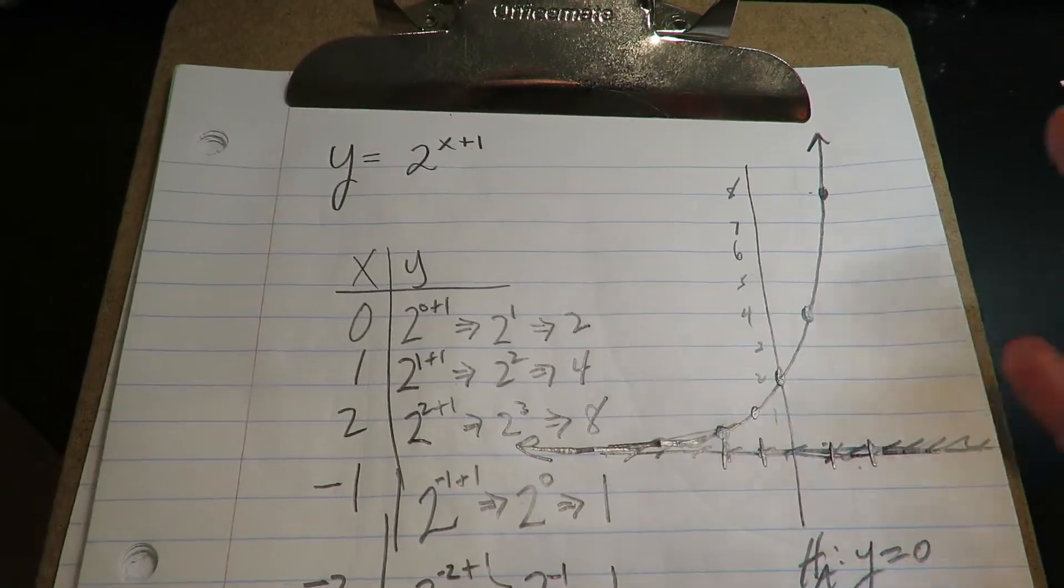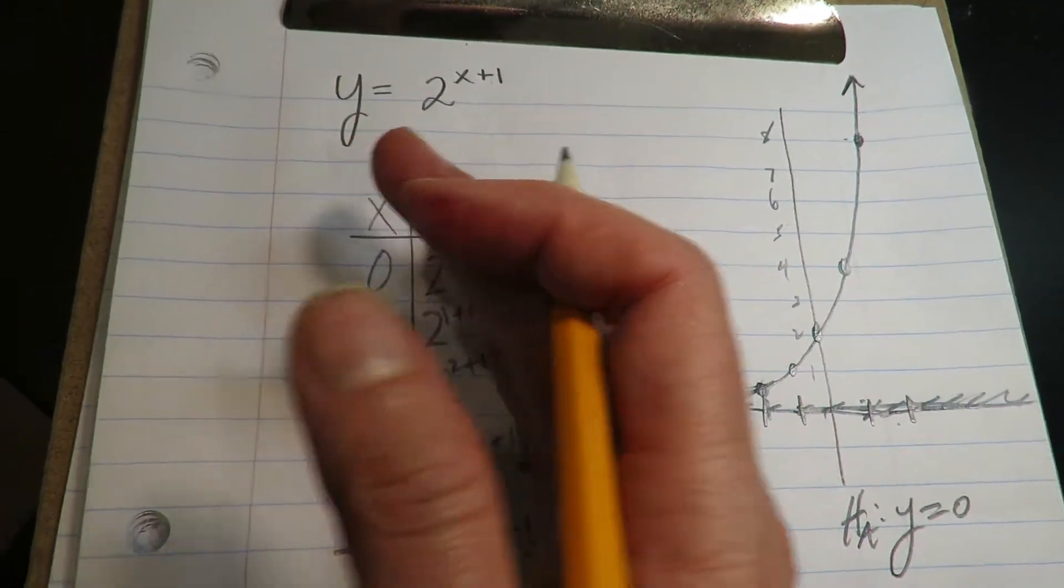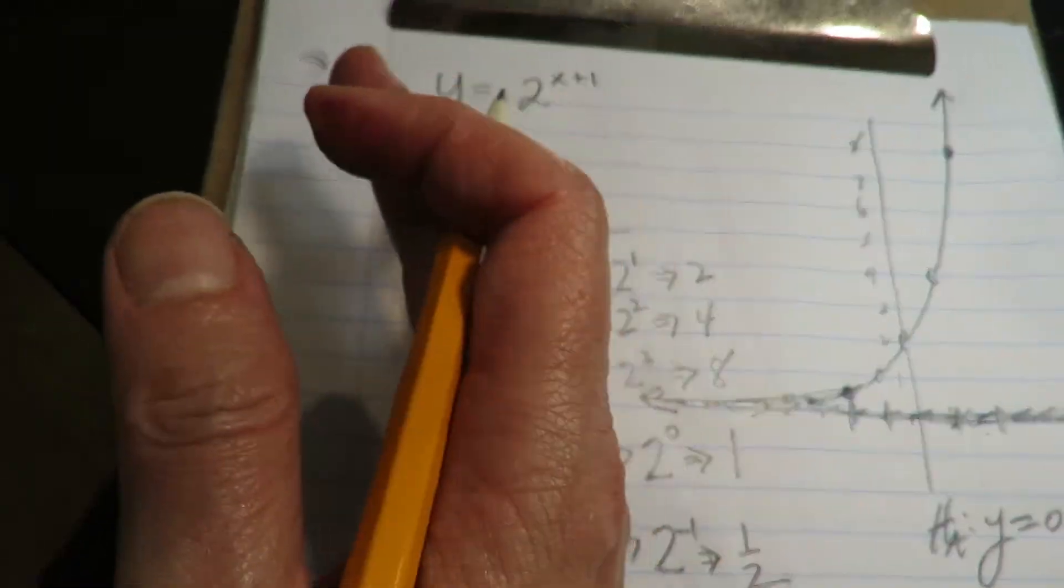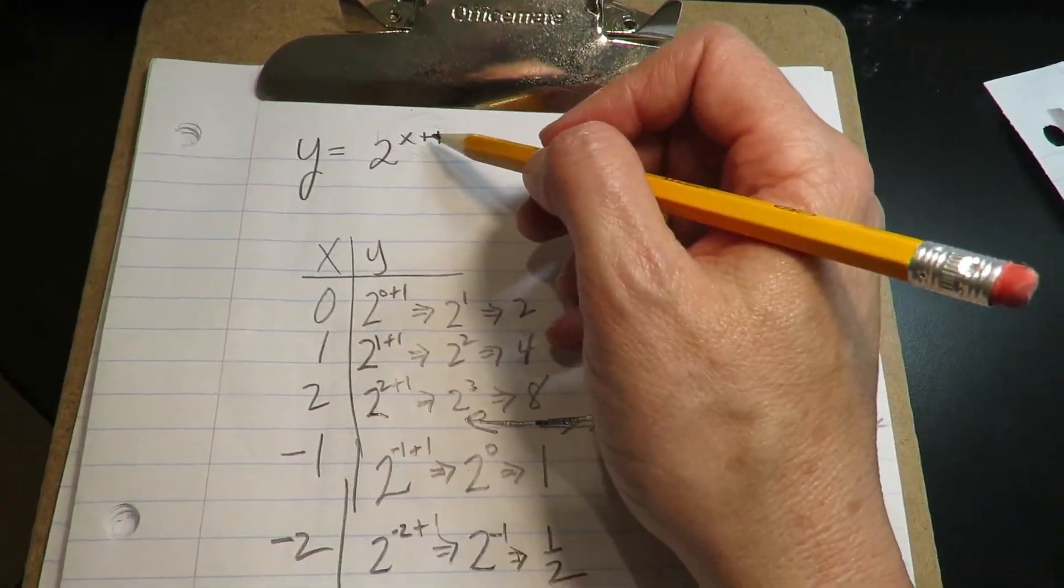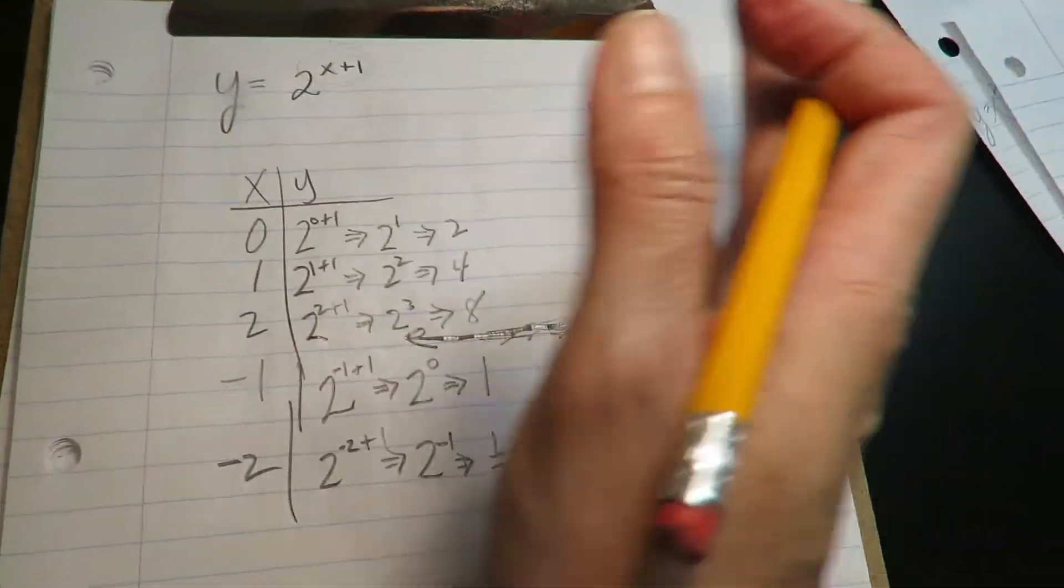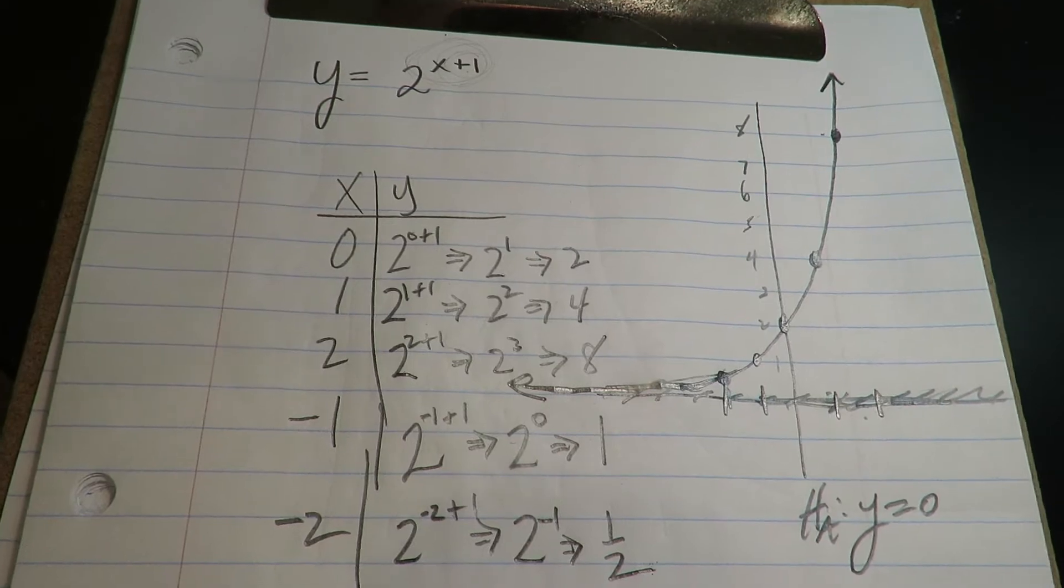So this is an example of exponential growth, but it's just pushed back to the left one unit. So it's just horizontally pushed to the left one unit. So if you add or subtract something in the exponential part, that moves it left or right. Positive is left, negative is right. It's always that opposite of what you think.